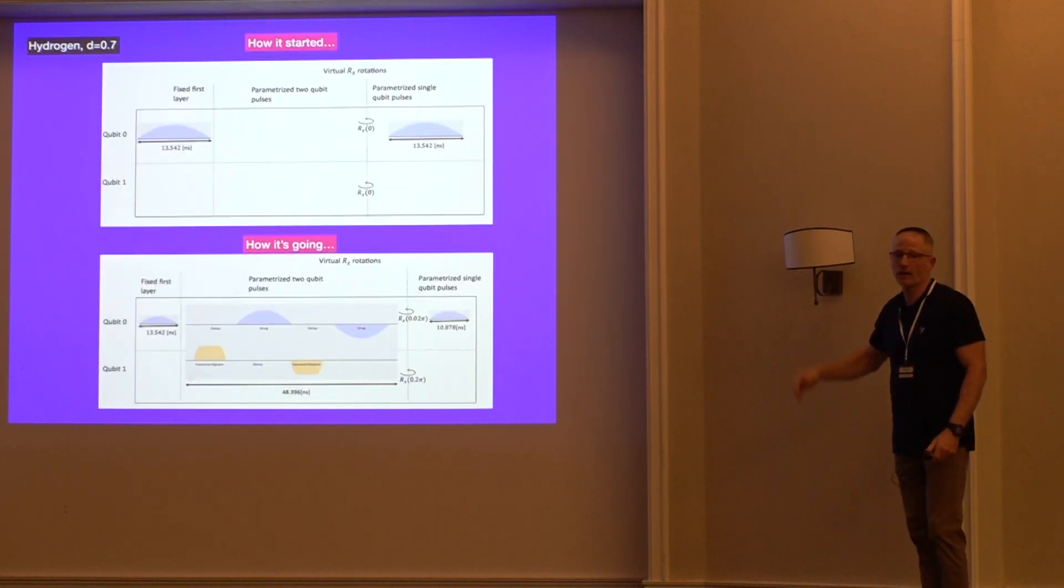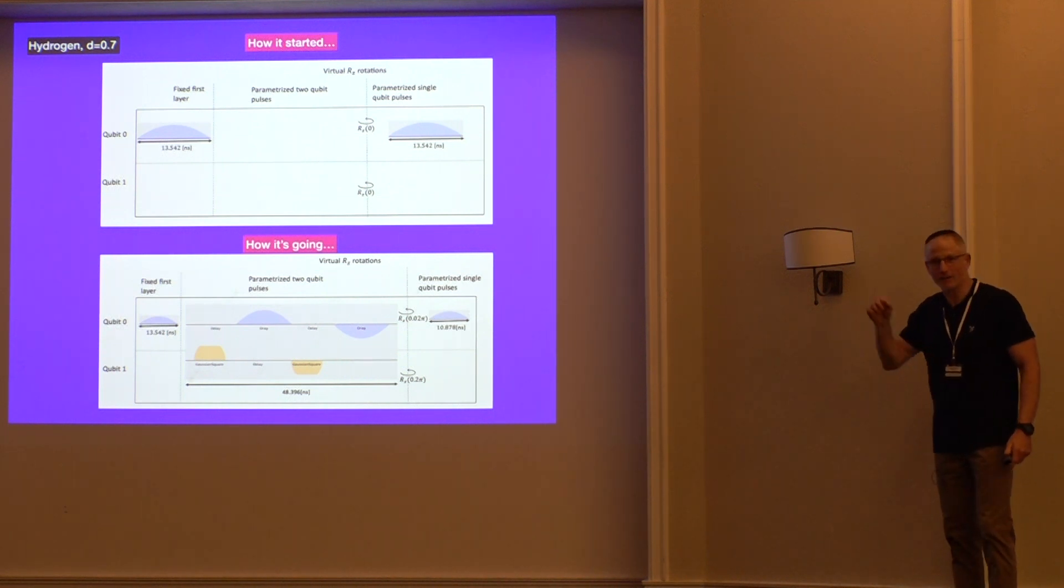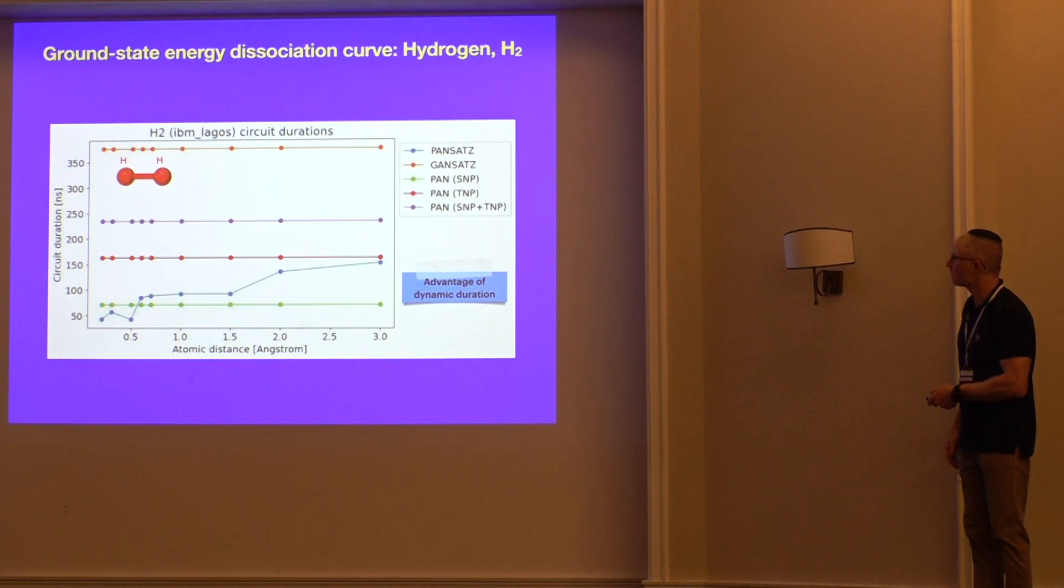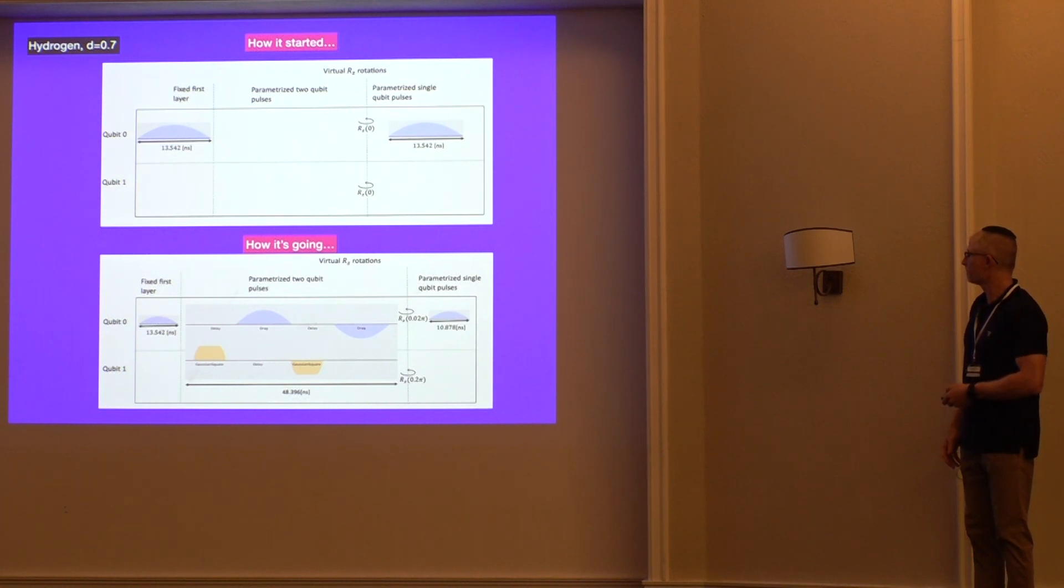This is a plot I just got at 2 in the morning from Dekel. He was up late last night. I got it this morning. Because I asked him, I wanted to visualize, see what's happening. Because it's like a black box. I didn't have time to really digest this. But this is how it started. This is the initial pulse parameter description. And then this is how it's going. This is at the end of the calculation. You can see the two qubits and the pulses and the duration time here. This is for the d equals 0.7 angstrom. So it's just to give you an idea for how that looks.